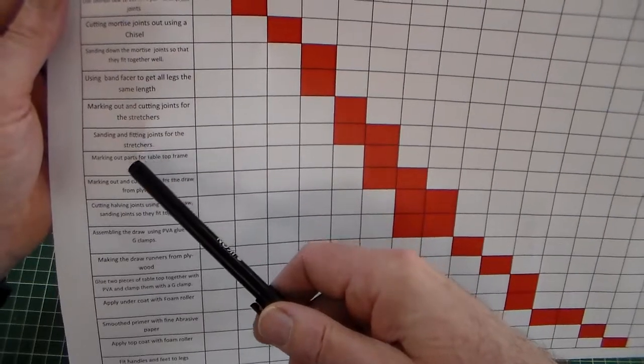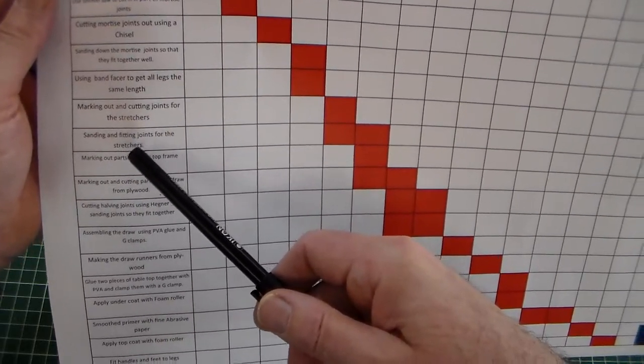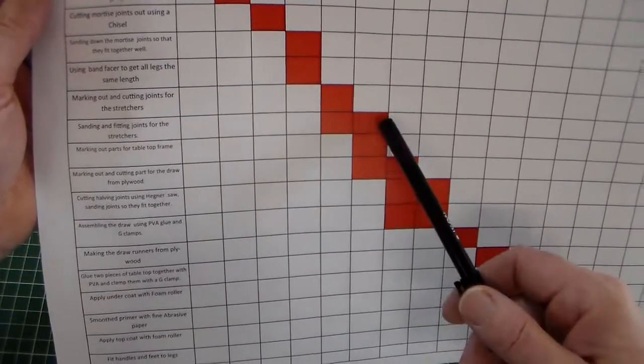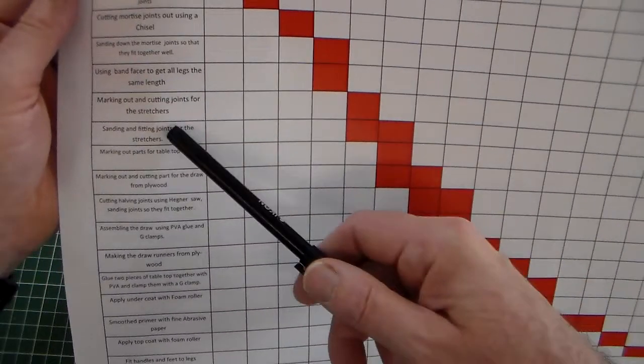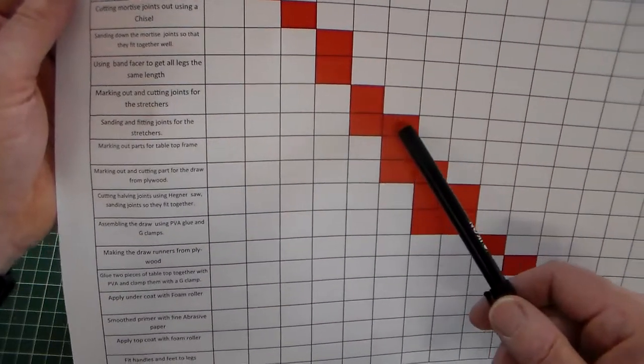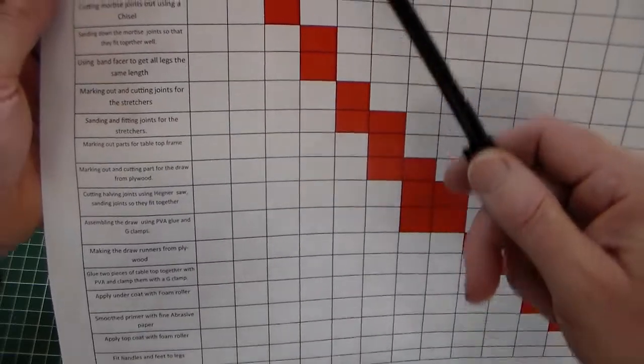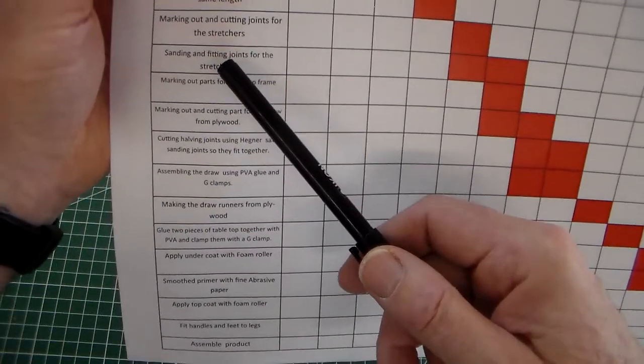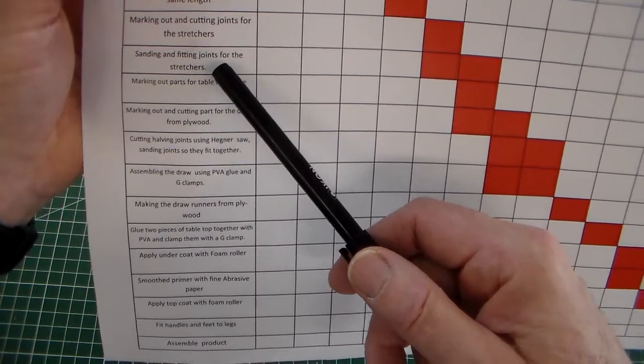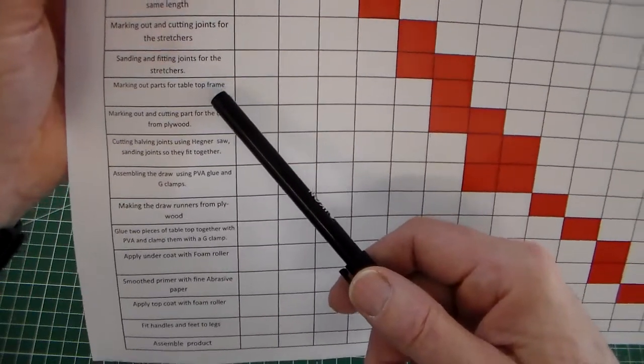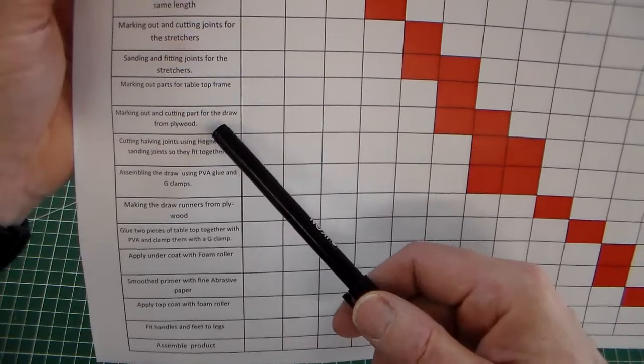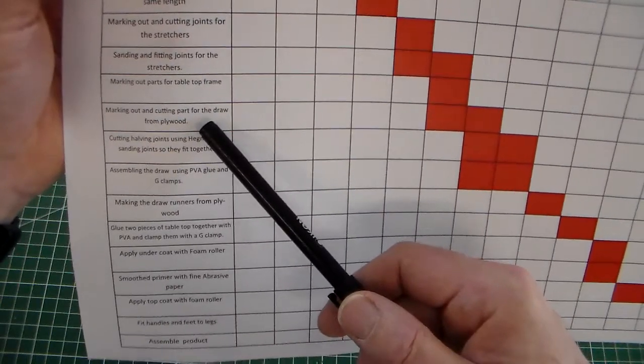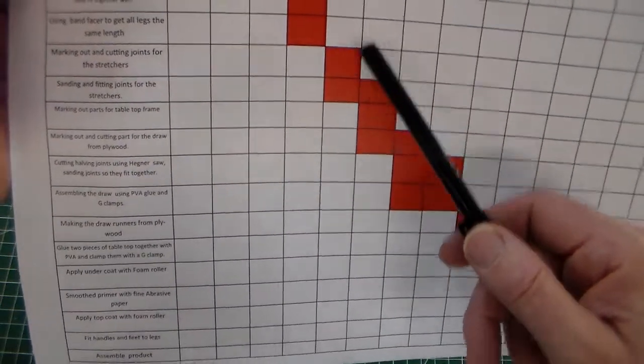Where someone got to here, hour six. In hour six they actually completed three tasks, so you can see one, two, three in hour six. In that time they sanded the fitting joints for the stretchers, marked out parts of the tabletop frame, marked out and cut parts for the drawer from plywood. So they were all done in hour six.